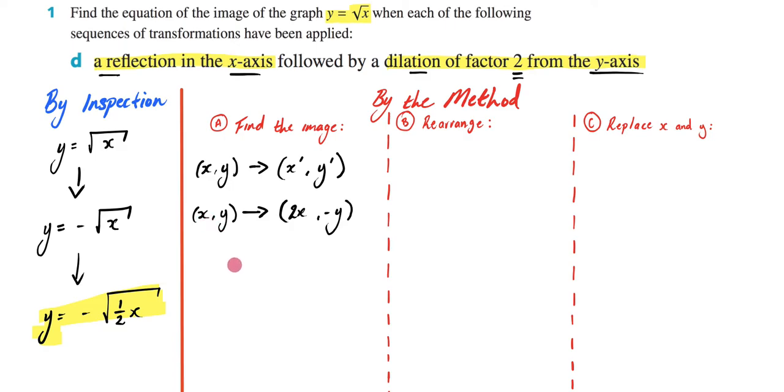So that means at the end of this step, what we've figured out is that my new x spot is going to be 2x. And my new y spot is going to be negative y. So that is how we do the first step. We just found the image.